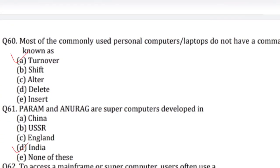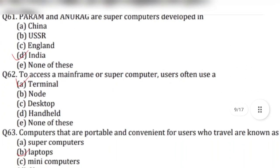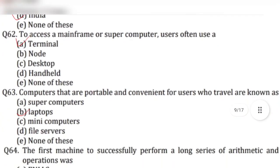Question 61: Param and Anurag are supercomputers developed in — answer is option D, India. Question 62: To access a mainframe or supercomputer, users often use a — answer is option A, terminal.